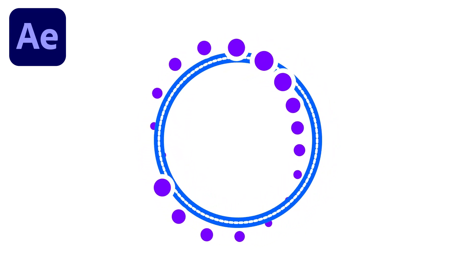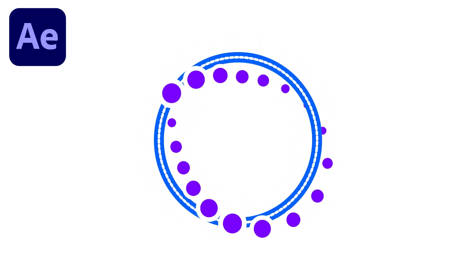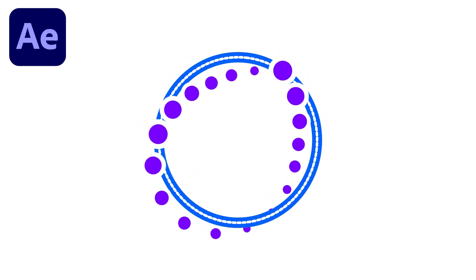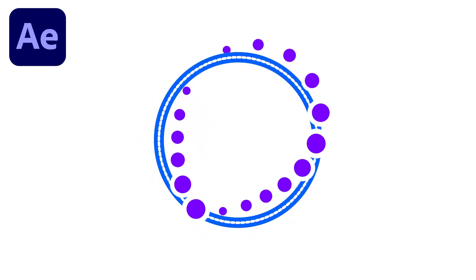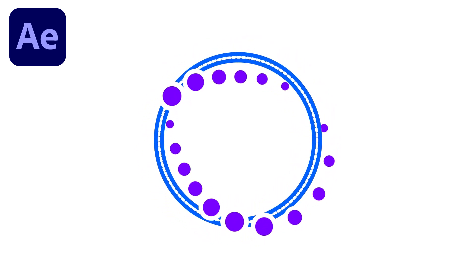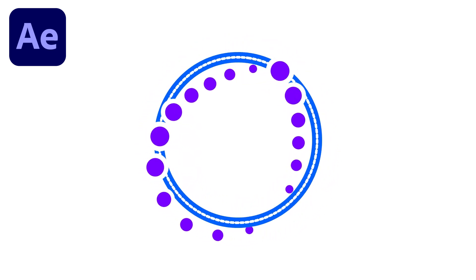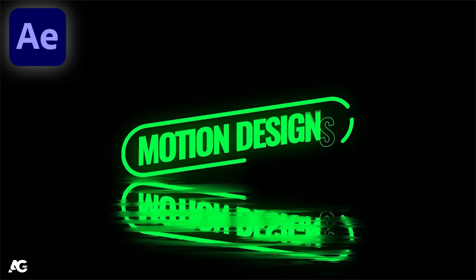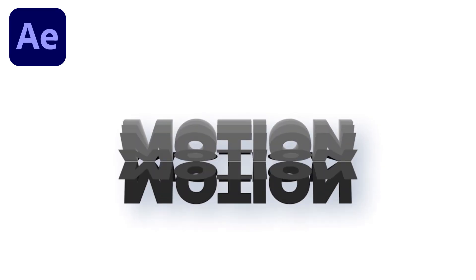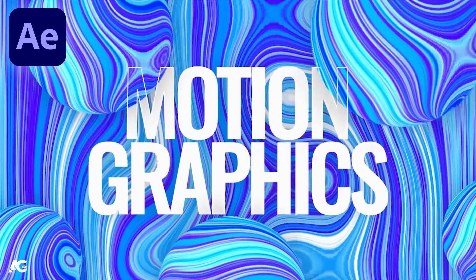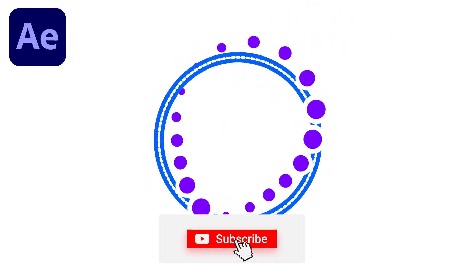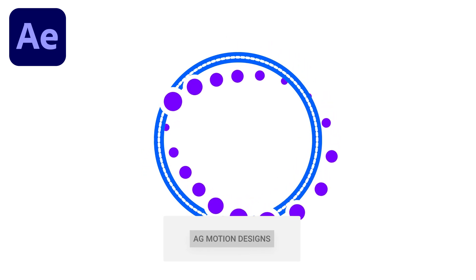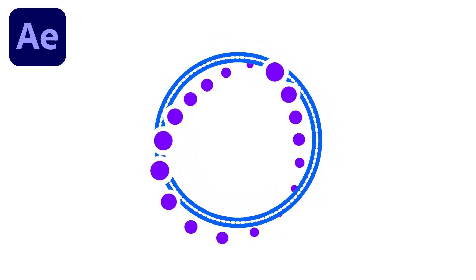Hey guys, welcome back to my channel AG Motion Designs. In today's video we are going to create a creative looping animation inside of After Effects without using any third-party plugin, using simple tips and tricks. If you want to learn more about motion graphics and logo animation, check out my Udemy courses — links are in the description. If you're new, please subscribe and hit the bell icon. Let's get started.